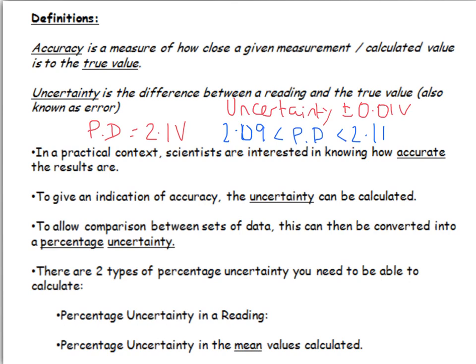Scientists are really interested in this because when they collect results they really want to know, well actually how accurate are my results? Could I be getting closer to the correct answer by using more precise equipment, for example, or taking different readings? And in this video I'm going to talk about the two different percentage uncertainties you need to be able to calculate.